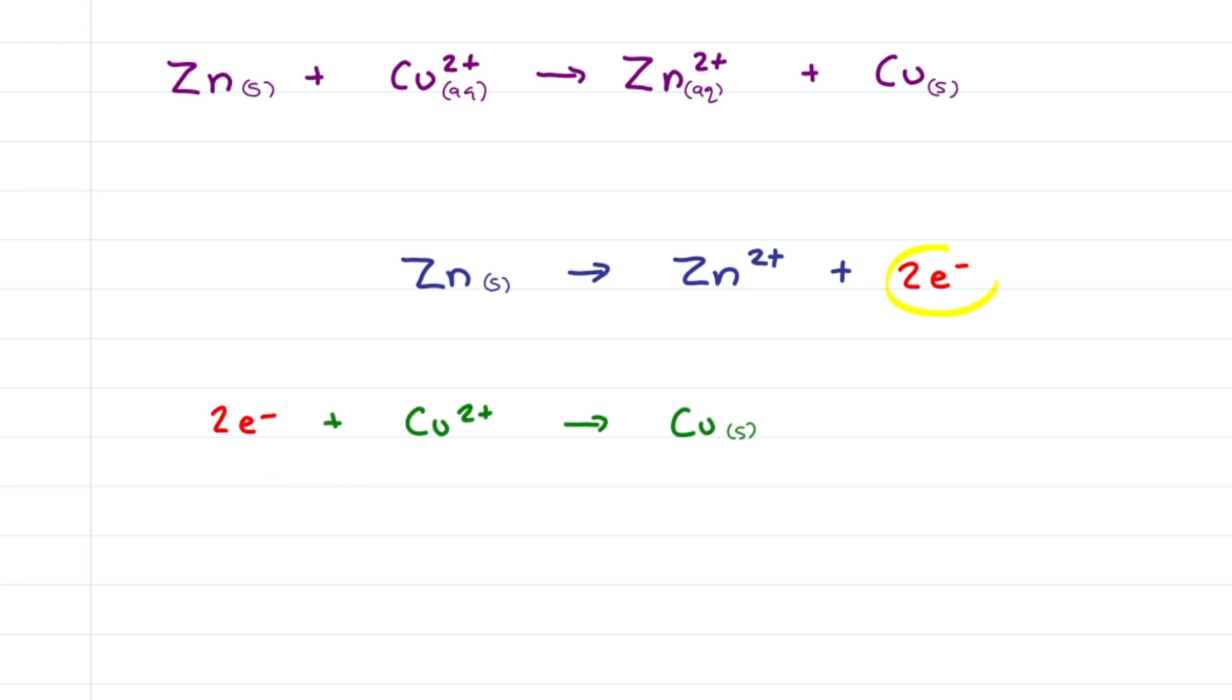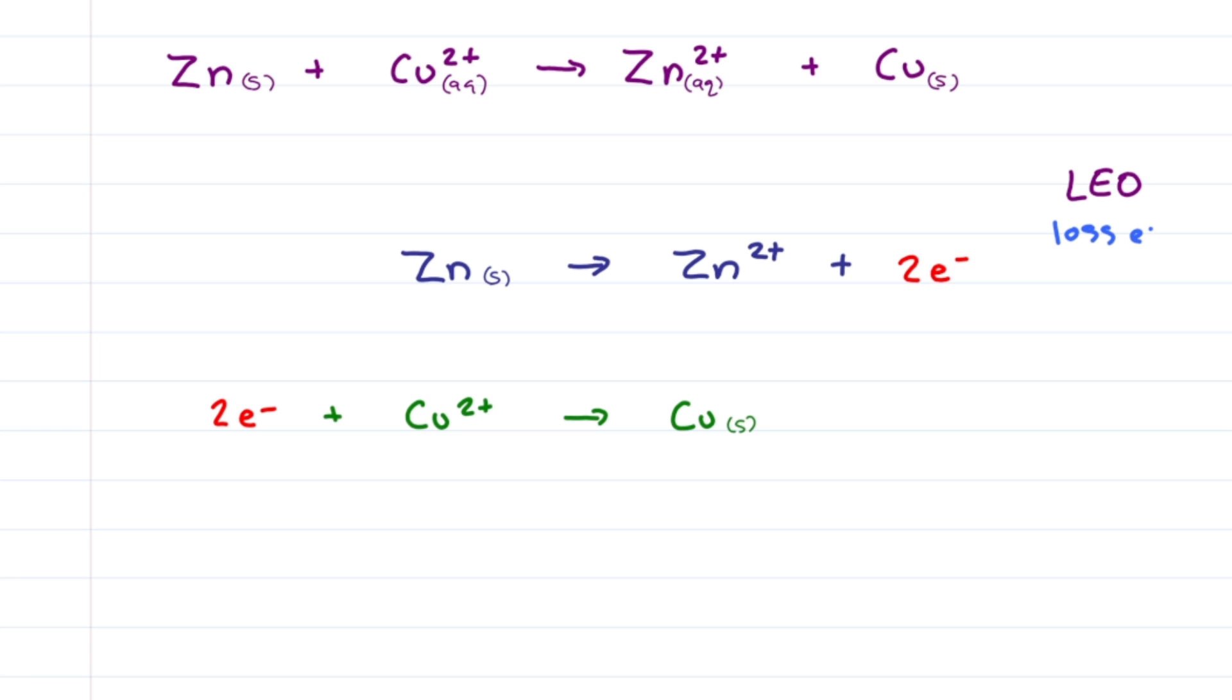Notice that zinc has two electrons on the product side, meaning it gave up or lost electrons. Leo, it lost electrons and got oxidized. This reaction has two electrons on the reactant side taken in or gained. Grrrr, it gained electrons and got reduced, giving us our oxidation and reduction half reactions.